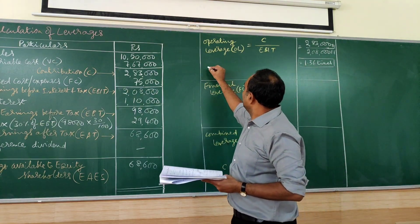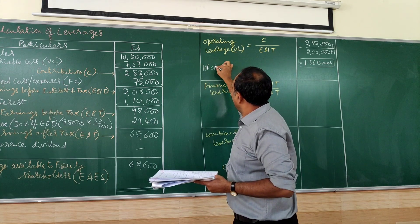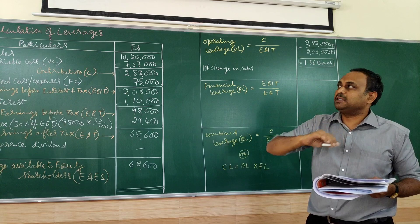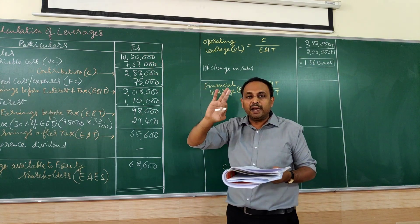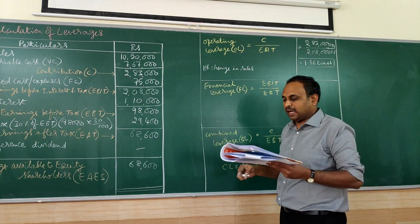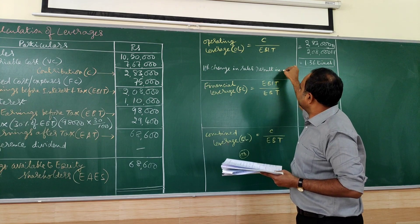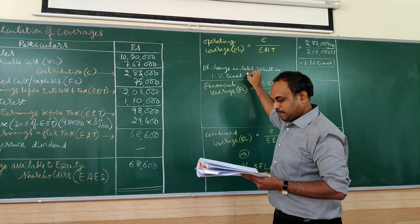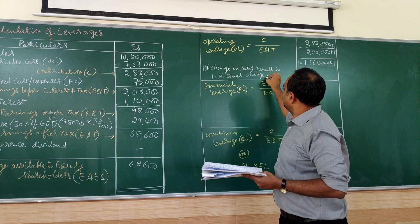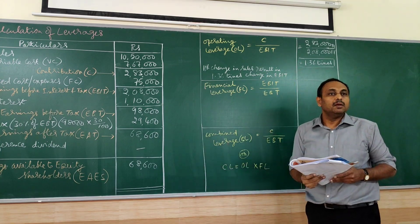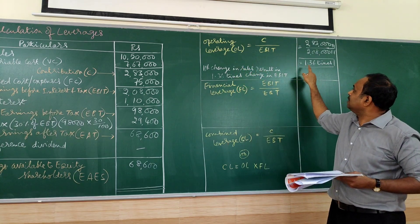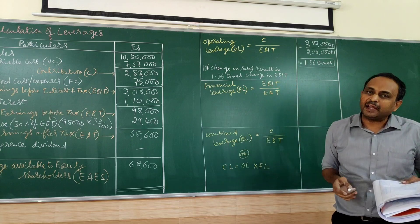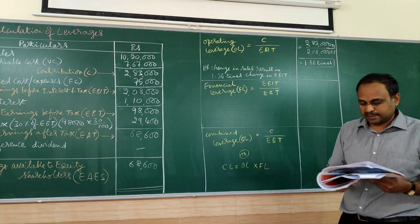The significance of this is 1% change in sales. If sales changes by 1%, it results in 1.36 times change in EBIT. If 1% change increases, EBIT will increase by 1.36 times. The profit will go more than 1%. It is a good sign for the company or the business.